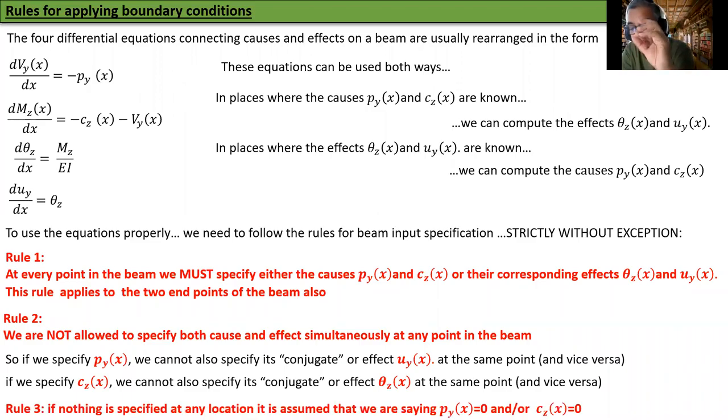Rule number three. If nothing is specified at any location, it is assumed that we are saying that the primal causes PY and or CZ are both zero.